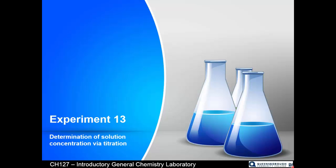Experiment 13: determination of solution concentration via titration. We determined solution concentration via spectrophotometry in the past; let's do it a different way. Instead of looking at the color of a solution, we can carefully react a solution of something that we know what it is — but don't know its concentration — with a solution of something that we also know what it is and do know its concentration. As long as we know the reaction between them, we can determine the concentration of our unknown.